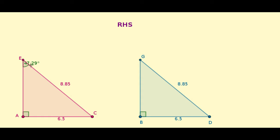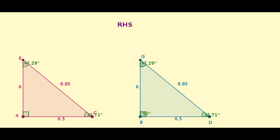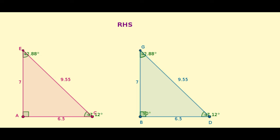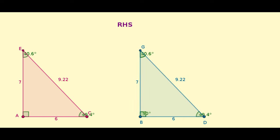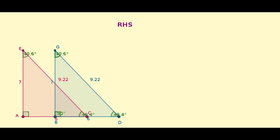You may check the other elements here. Angle E is 47.29 degrees, and the corresponding angle G is also equal. Angle C is 42.71 degrees, and angle D is also 42.71 degrees. The length of side AE, which we didn't initially know, is 6 — and here it is also 6. That means, by checking the three elements — right angle, hypotenuse, and side — the other three elements are also confirmed equal, because the two triangles are congruent.